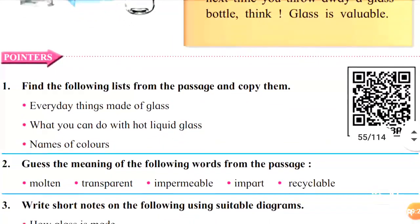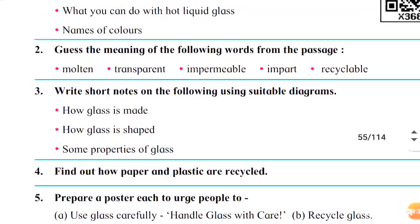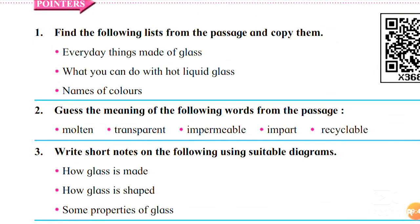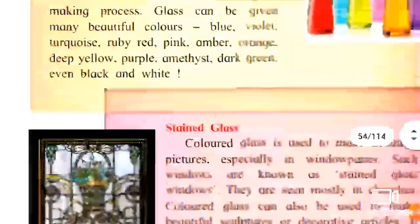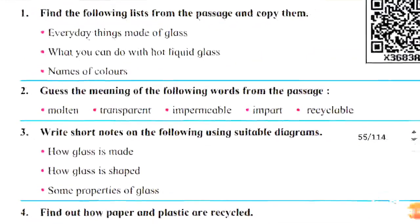You can find a list on the page — copy down everyday things made of glass. Also note what you can do with hot liquid glass to shape it into different forms. Some colors of glass include blue, turquoise, ruby, and others.